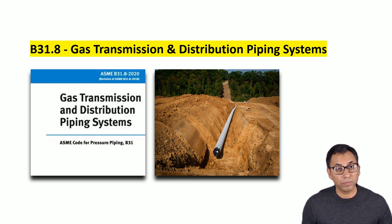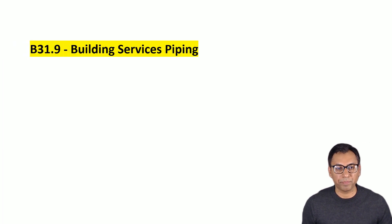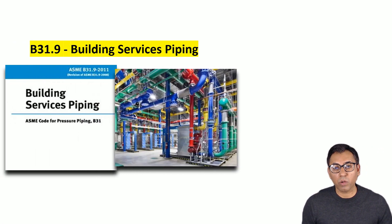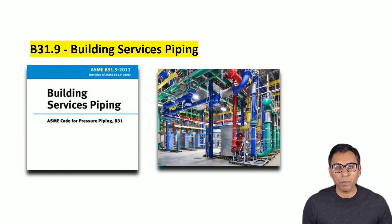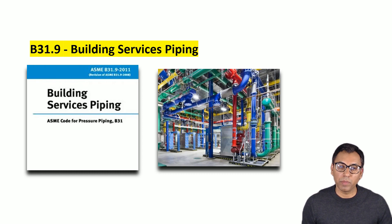The next chapter of the ASME B31 series is B31.9, which is Building Services Piping. ASME B31.9 covers the requirements for the design, material, fabrication, installation, inspection, examination and testing of pipes for building services. It includes piping systems in buildings or within property limits.